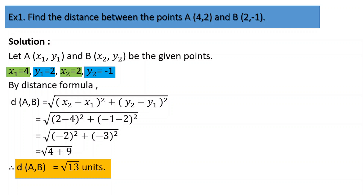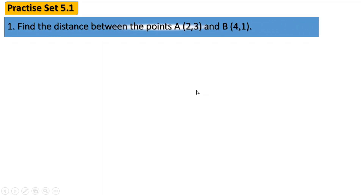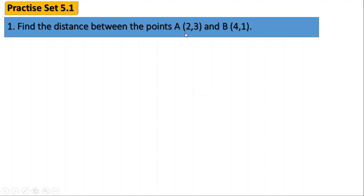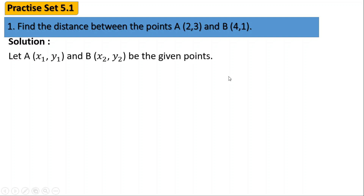Now let's start with practice set 5.1. The first question is: find the distance between the points A(2, 3) and B(4, 1). We are going to consider point A as (x1, y1) and B as (x2, y2). So the value of x1 is 2, y1 is 3, x2 is 4, and y2 is 1.